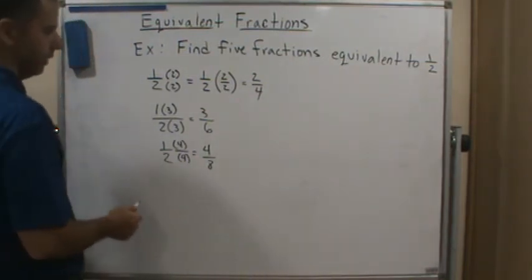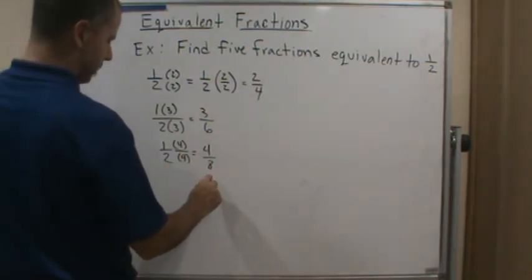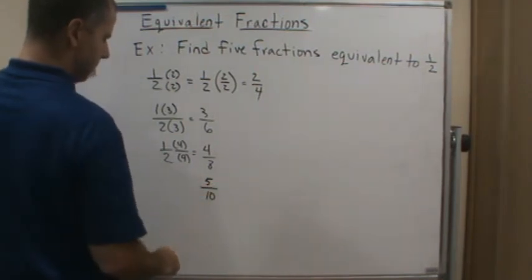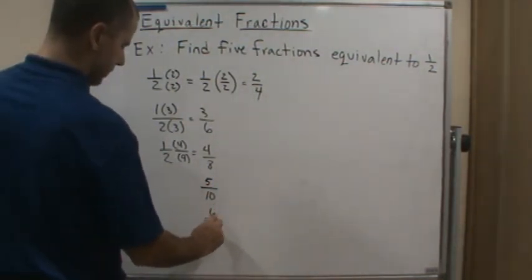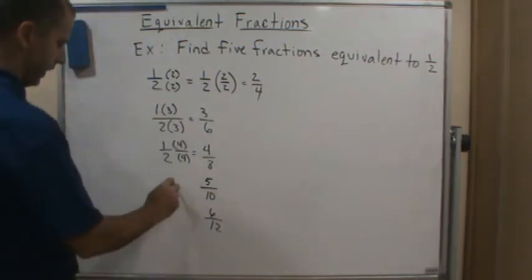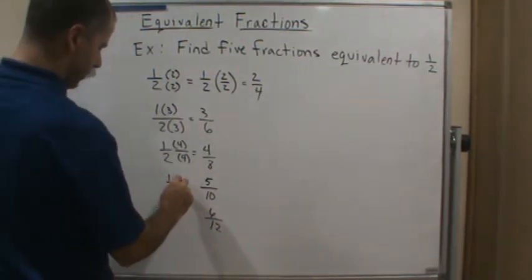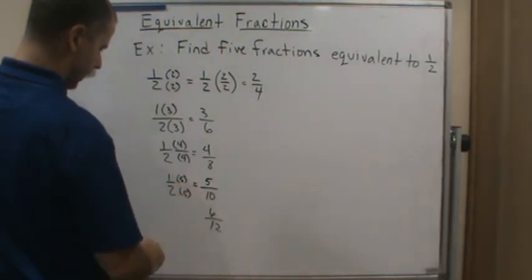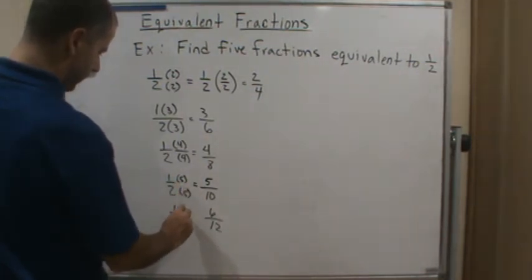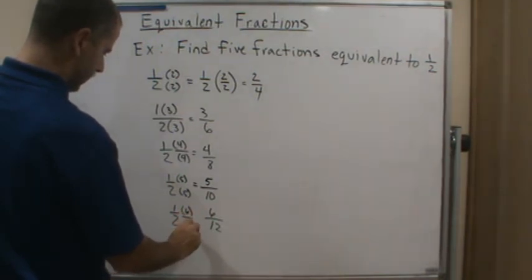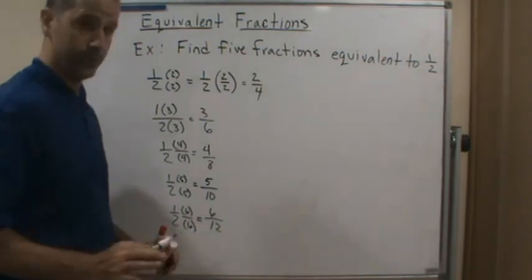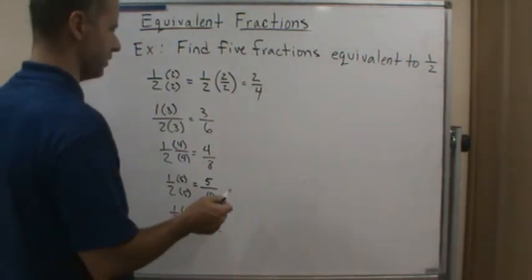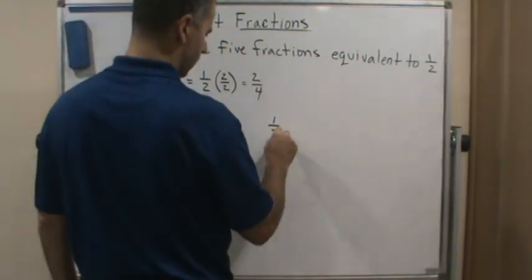And if you see the pattern, then we know that the next one is going to be 5 tenths. And the next one is 6 twelfths. So, again, if I just take 1 half and multiply the top and the bottom by 5. And then I take 1 half and multiply the top and the bottom by 6.